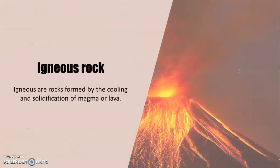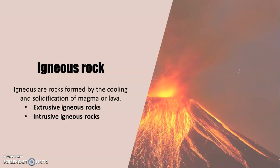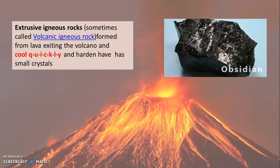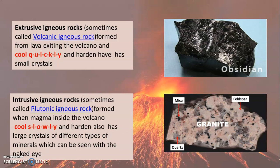Igneous rocks derive from the Latin word ignis, meaning fire. These types of rocks form from the solidification of molten rock material — magma or lava. We have two kinds of igneous rocks: extrusive and intrusive. Extrusive igneous rocks, sometimes called volcanic igneous rocks, are lava that solidifies at the Earth's surface, cooling quickly and forming tiny crystals — an example is obsidian. Intrusive igneous rocks, sometimes called plutonic igneous rocks, are magma that solidifies below the Earth's surface, cooling slowly and forming large, visible minerals — an example is granite.